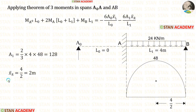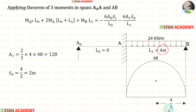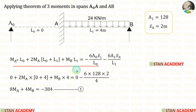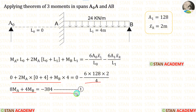Now let us calculate X-bar right. This is a symmetrical diagram, so the centroid lies in the center. When we divide 4 by 2, we get the centroid distance towards the right, so X-bar right = 2 meters. In the equation, L0 = 0, L1 = 4, A1 = 128, X-bar right = 2. The terms for the imaginary span will be zero. After the calculations, we are making the first equation.